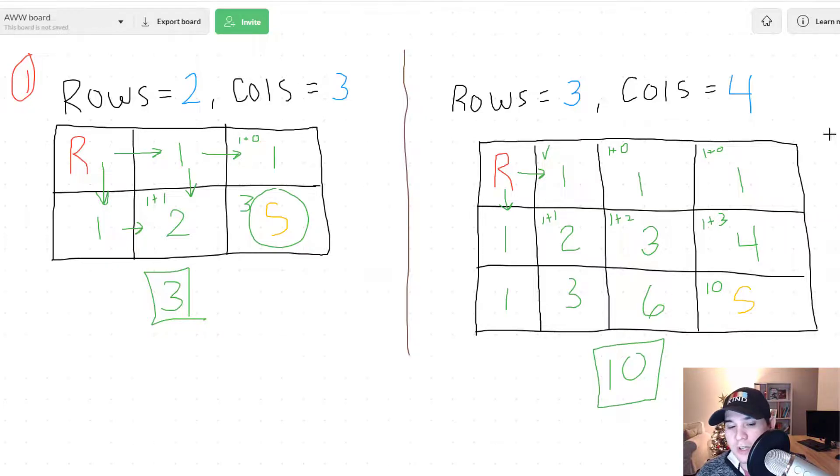So essentially our recurrence relation is if we were to have our current position be called i j then all that means is we need to look up dp of i minus one at index j plus